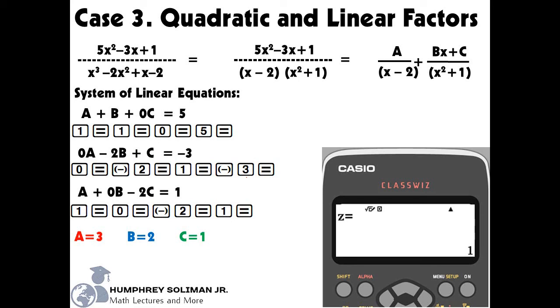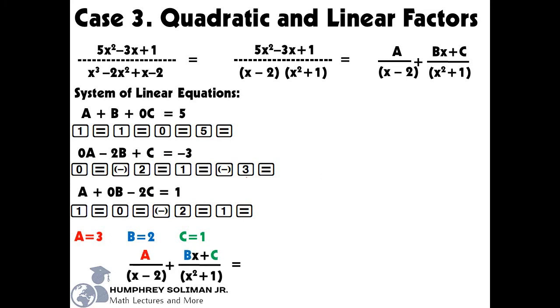Please make sure that you don't switch the values of a, b and c, or else your answer will be inaccurate. Our final answer in decomposing the rational expression into two partial fractions is 3 over the quantity x minus 2, plus the quantity 2x plus 1 over the quantity x squared plus 1. I hope this video helped you learn about the case 3 of partial fraction decomposition, quadratic and linear factors.